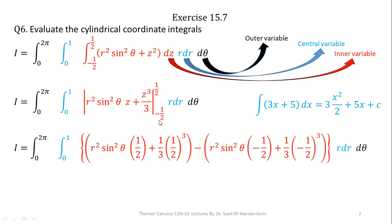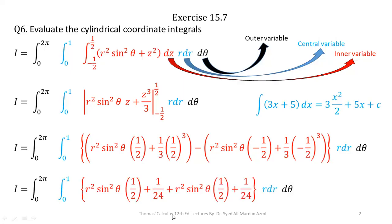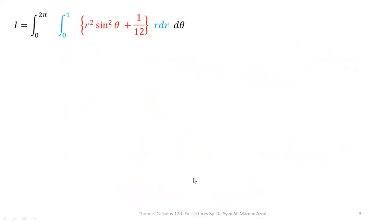Applying the limits — upper limit minus lower limit — when we replace Z with 1/2, we have R squared sin squared Theta times 1/2 plus 1/3 into (1/2) cubed. Similarly, for the lower limit, R squared sin squared Theta times minus 1/2 plus 1/3 into (minus 1/2) cubed. Opening the brackets and simplifying: R squared sin squared Theta into 1/2 plus 1/24, and the minus-minus becomes plus, giving R squared sin squared Theta into 1/2 plus 1/24. So R squared sin squared Theta over 2 plus R squared sin squared Theta over 2 gives R squared sin squared Theta, and 1/24 plus 1/24 gives 1/12. Up to here, integration with respect to Z is complete.